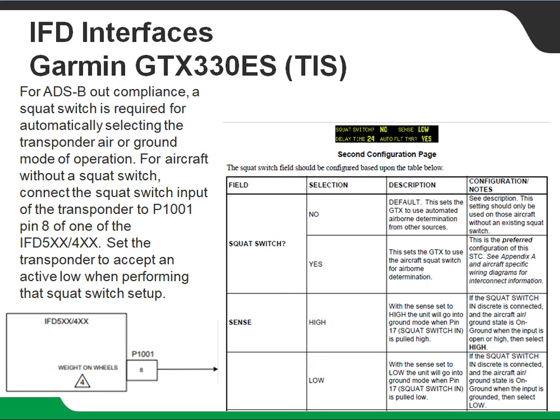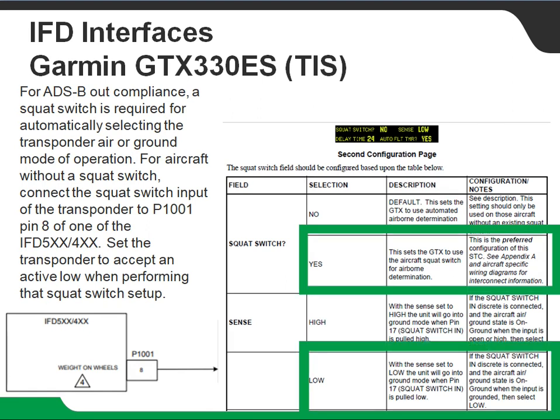Something else to consider for ADS-B out compliance: you may need to put in a squat switch, or squat switch source, the GTX 330. The IFD can supply this via our pseudo weight-on-wheels output from the P1001 connector pin 8. If you're going to use the pseudo weight-on-wheels out of the IFD, we're going to set squat switch to yes on the transponder and we're going to set the sense to low — that'll be a low on ground. The pseudo weight-on-wheels out of the IFD transitions at about 35 knots GPS ground speed, and it will put a discrete low when it's below 35 knots.